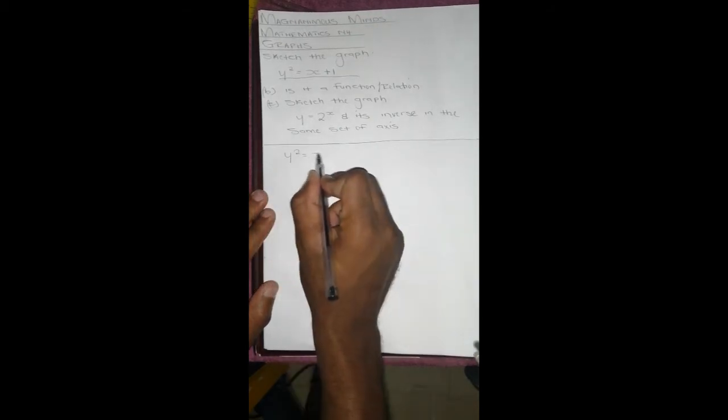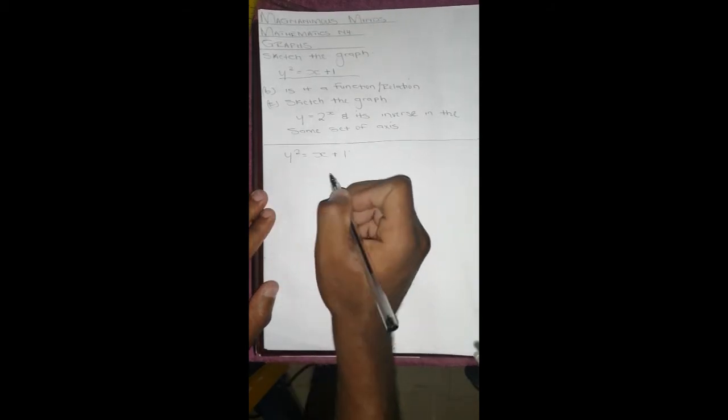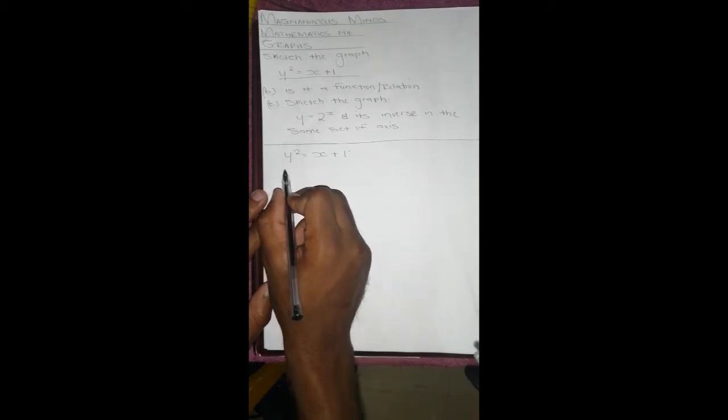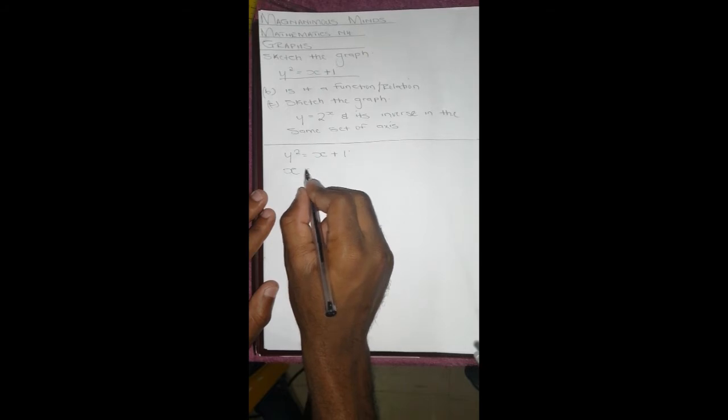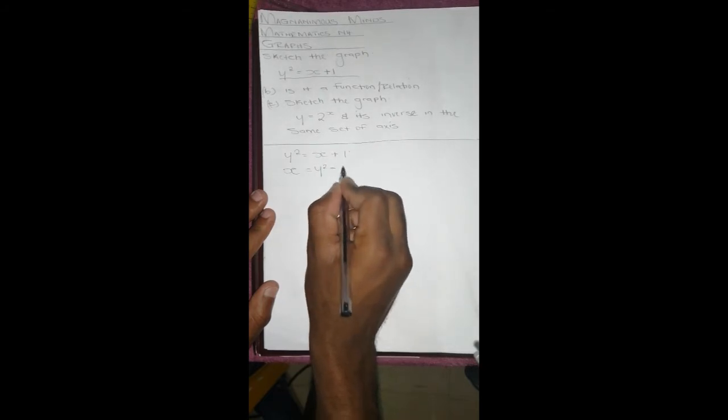We have y squared equals x plus one. If we rearrange, x equals y squared minus one. Let's see, this is our independent variable and this is the dependent variable.